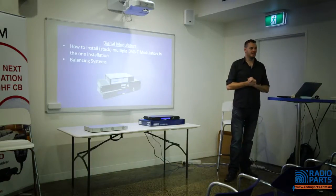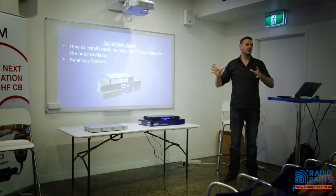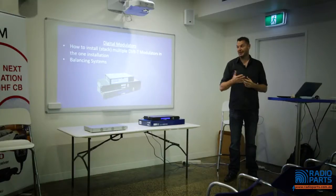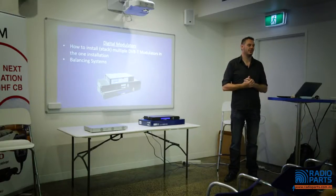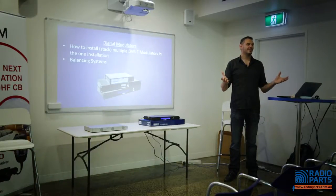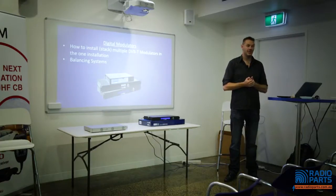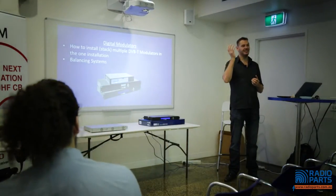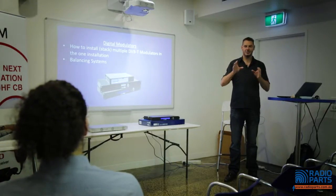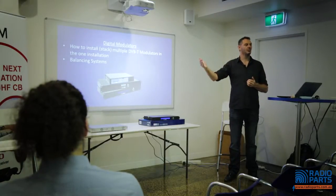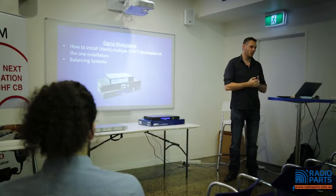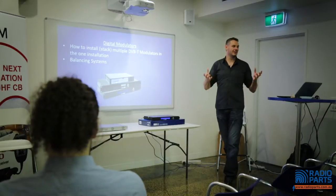The most common call we get these days is people wanting to use more than one modulator at a time — in commercial applications and now even in domestic use. They might have multiple Foxtel channels to distribute, or a pub or club with 60, 80, or 100 TVs wanting eight channels distributed. Coax is an easy method and a modulator converts an AV source to an RF channel, mixing it into the existing free-to-air system so a TV can scan and pick which channel to watch.